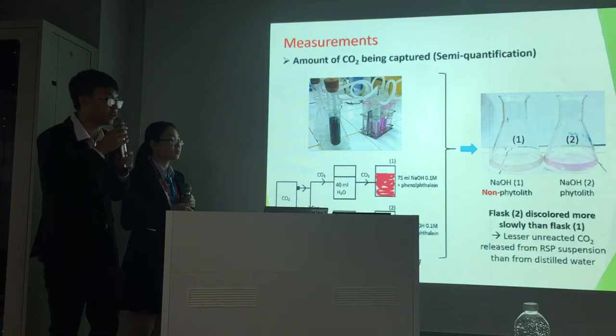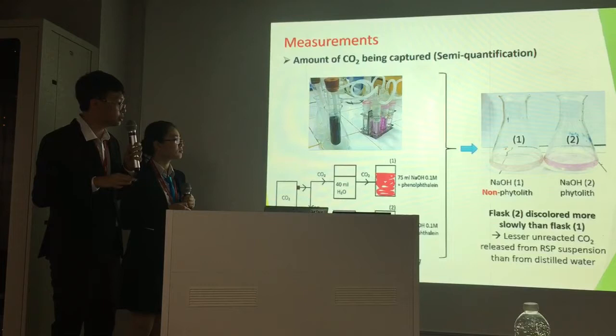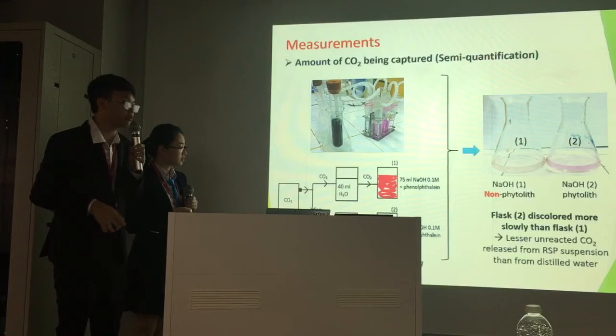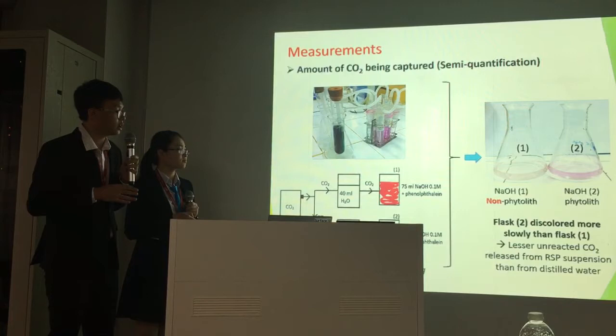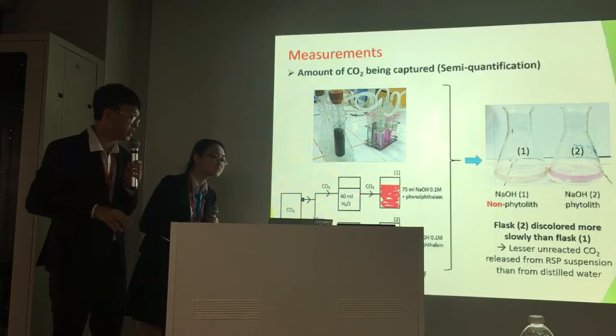The discoloration of the sodium hydroxide solution is used to determine the ability of rice straw phytolith to capture carbon dioxide. The flask that absorbs the unreacted carbon dioxide from the rice straw phytolith solution discolored more slowly than the distilled water only flask. This proves that the unreacted carbon dioxide released from the rice straw phytolith suspension is less than that from distilled water.